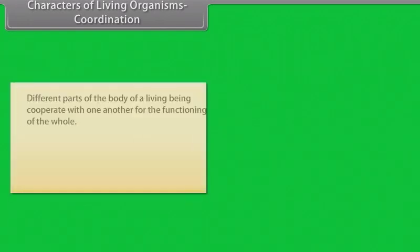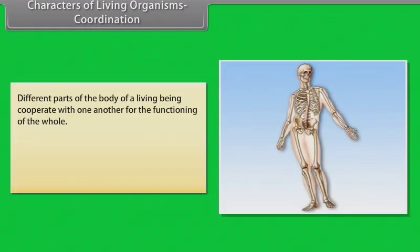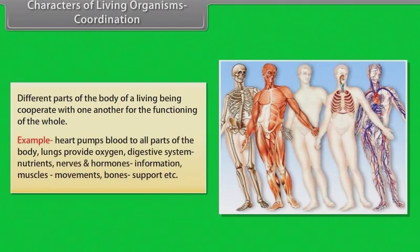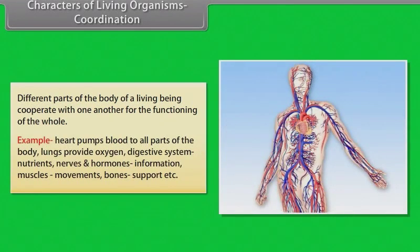Different parts of the body of a living being cooperate with one another for the functioning of the whole. Example: Heart pumps blood to all parts of the body, lungs provide oxygen, digestive system nutrients, nerves and hormones information, muscles movements, bones support, etc.